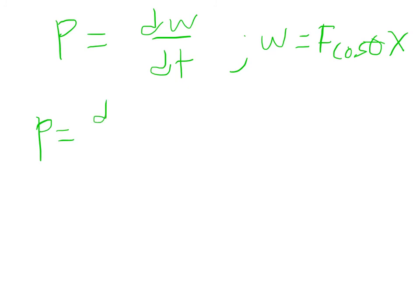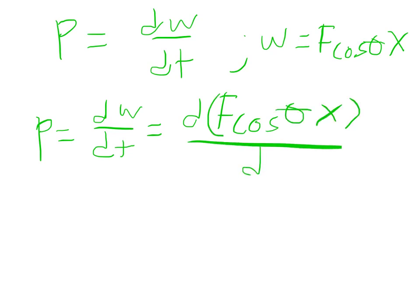To look a little bit more about power: if we call power as dw dt, we know that work is f cos theta x. So p is dw dt, where we're looking at d of f cos theta x dt. As long as we're talking about a constant f, this equals f cos theta dx dt.